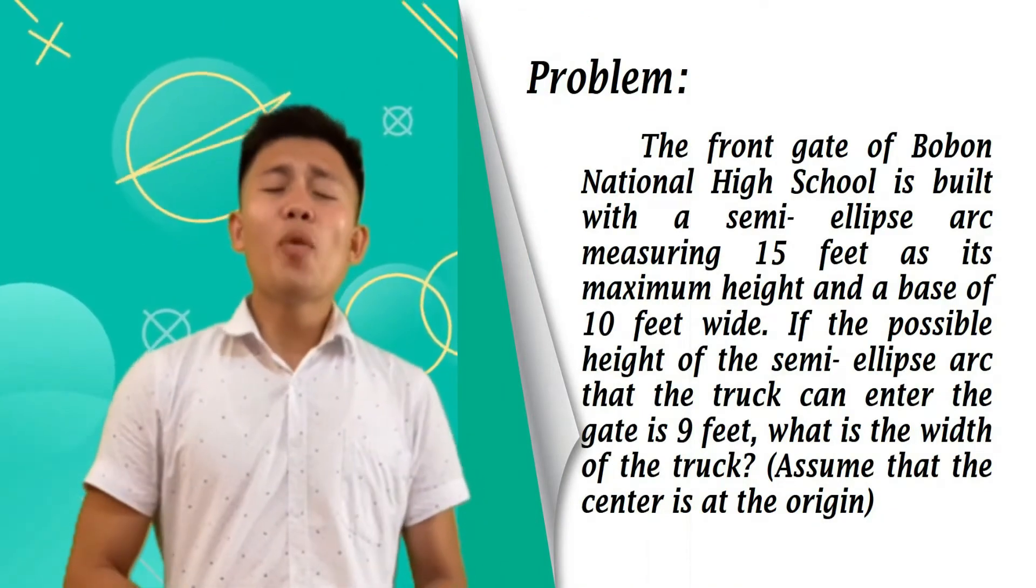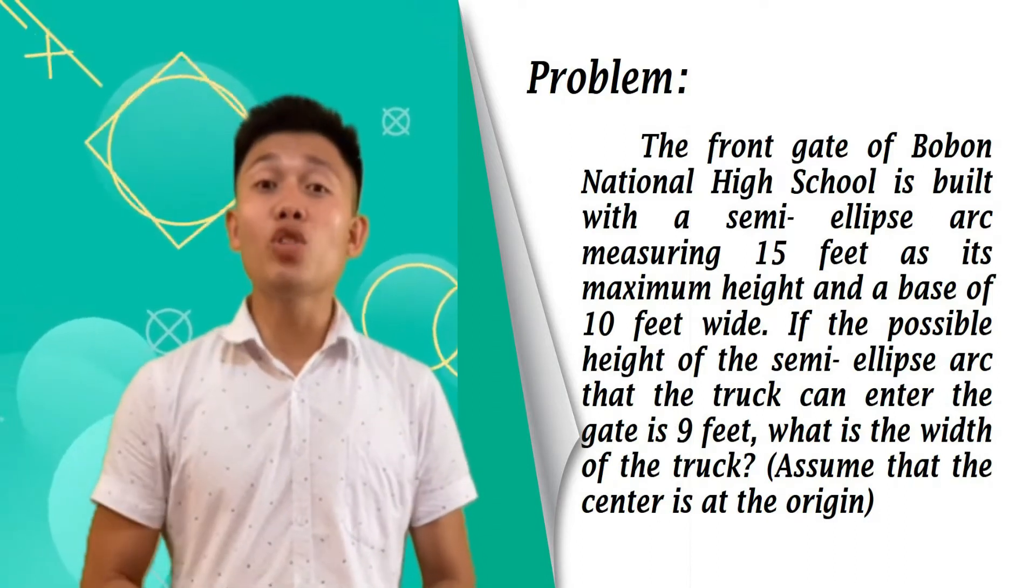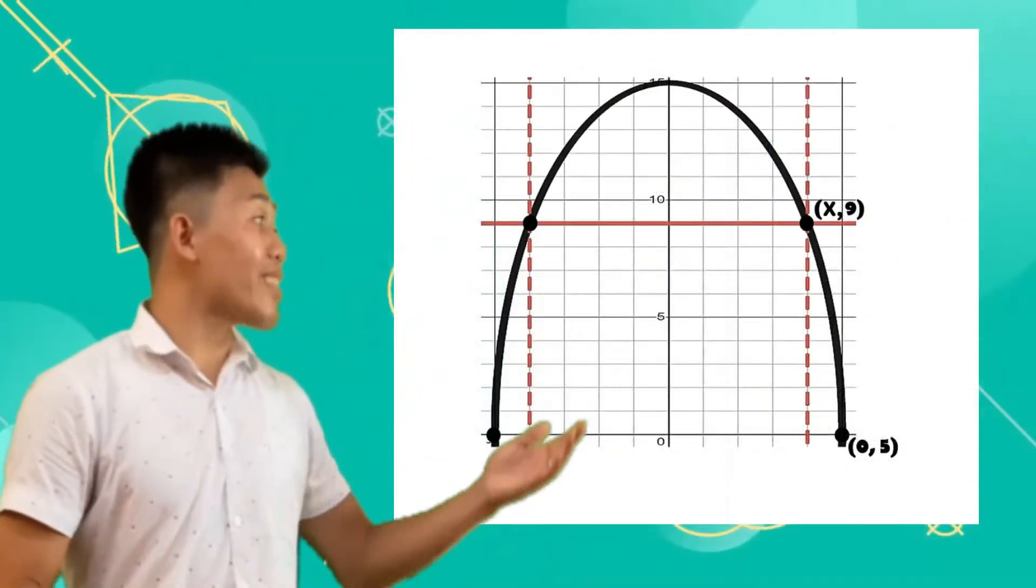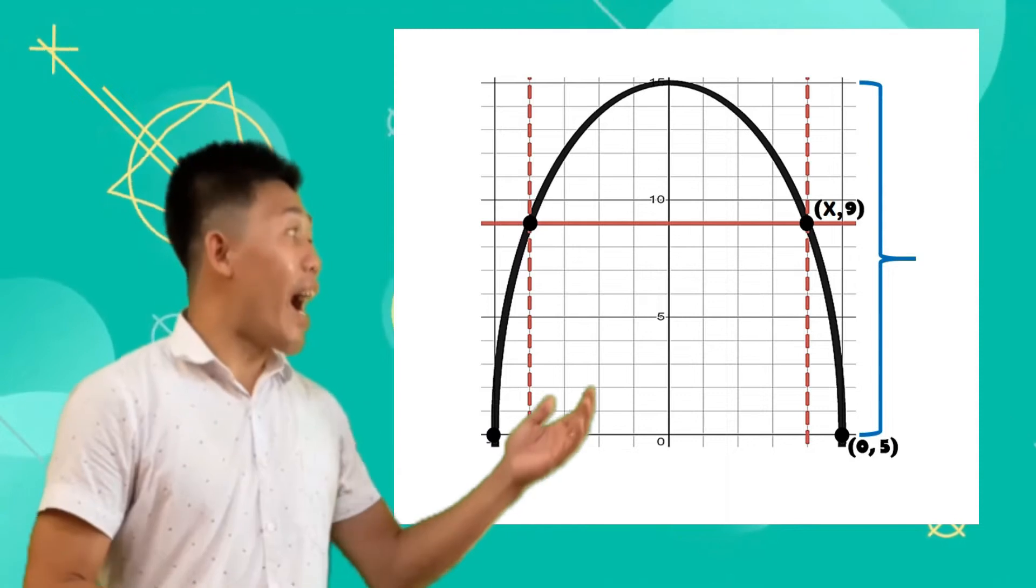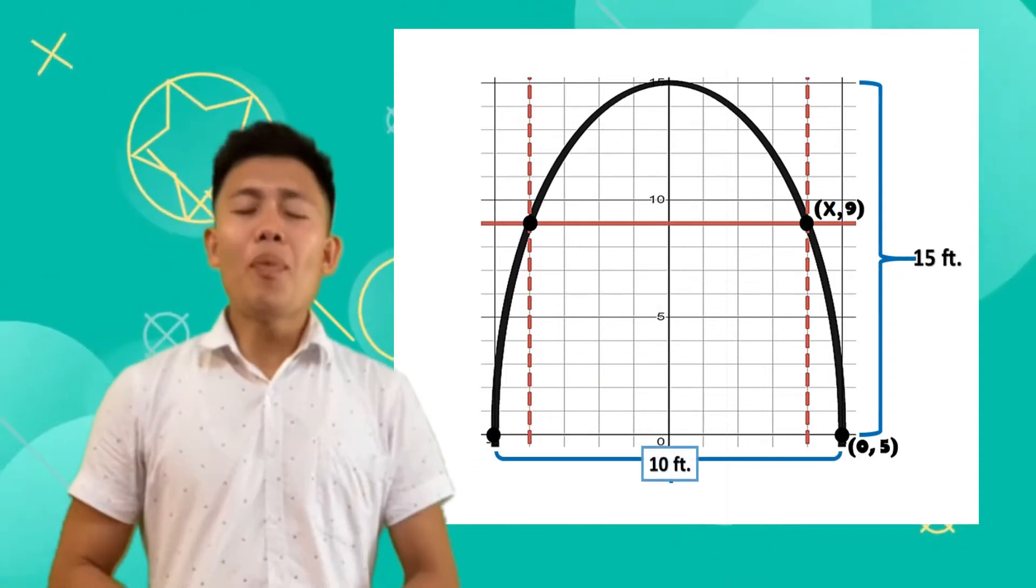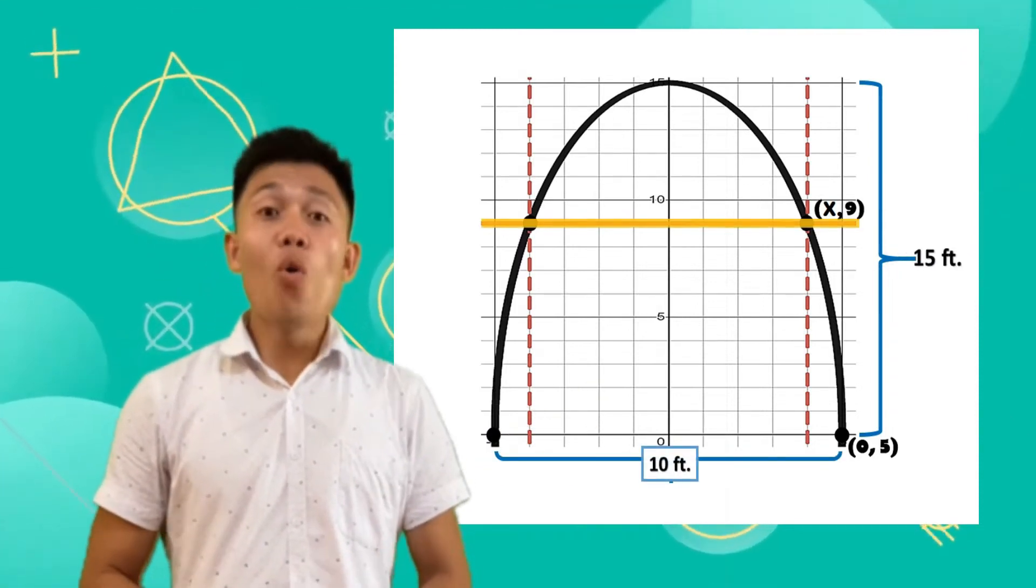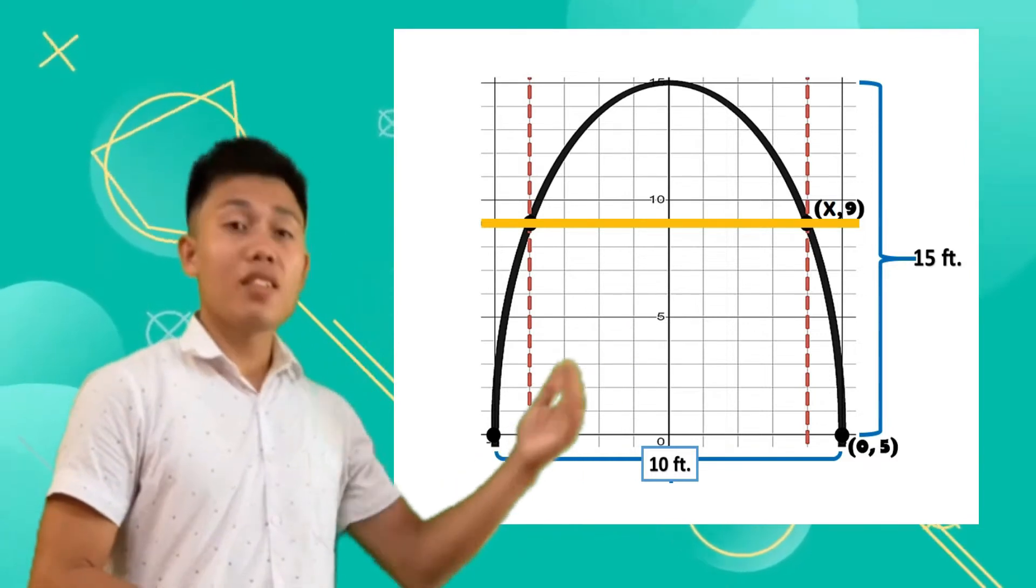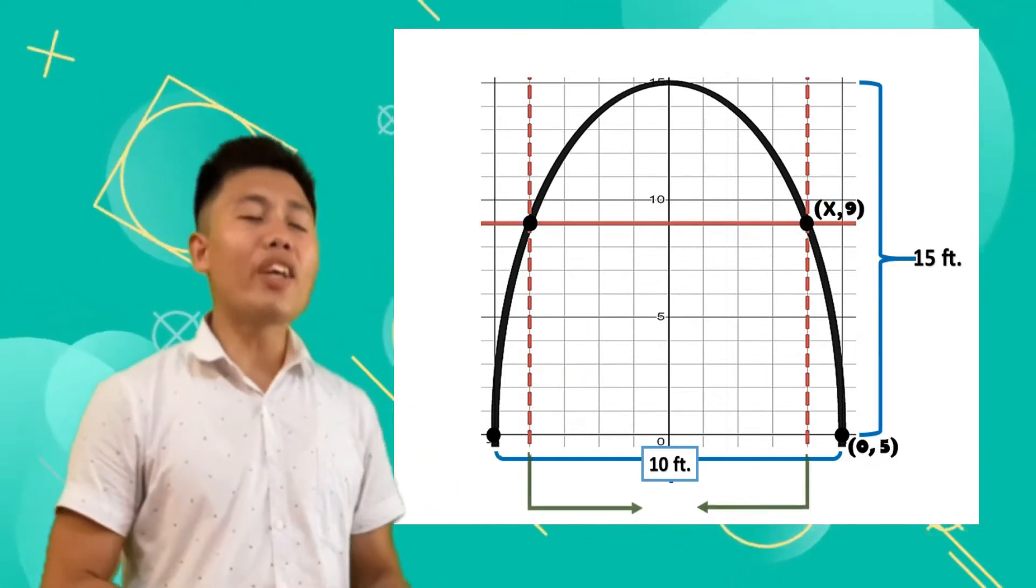Back to the problem. If we are going to put it into the Cartesian coordinate plane, it looks like this: 15 feet high, 10 feet wide. The possible height of the semi-ellipse arc is 9 feet. So, we are going to find this one.